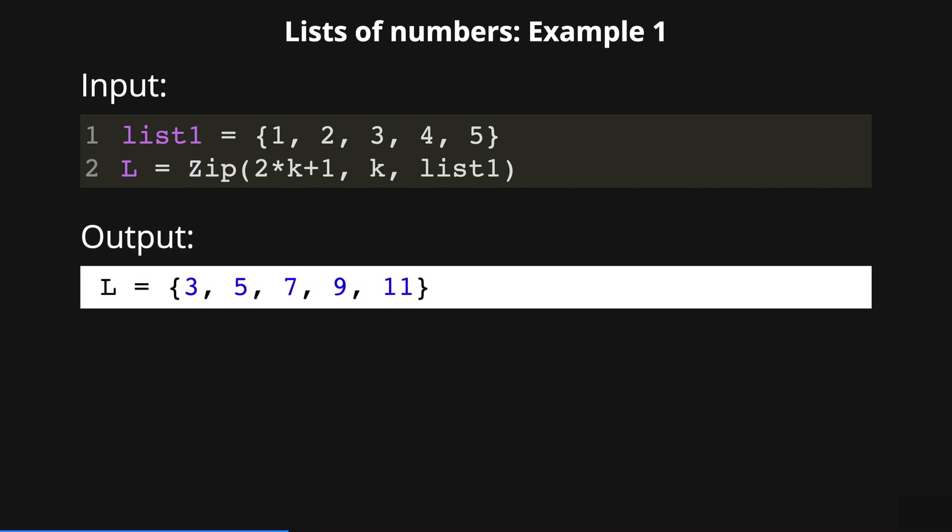In the output, in this case, we obtain the list L equal to the odd numbers from 3 to 11. The way this command works here is by evaluating each element of list1 in the expression 2k plus 1. So, for example, 1 evaluated in the expression gives 3, then 2 evaluated in the expression gives 5, and so on.